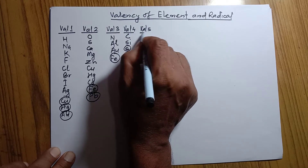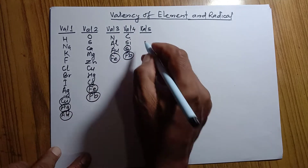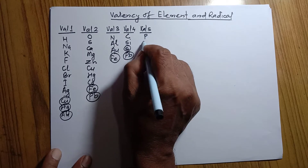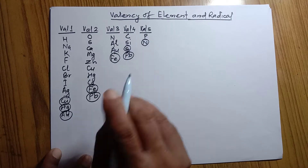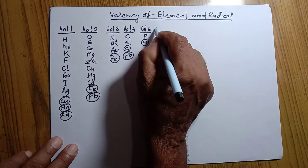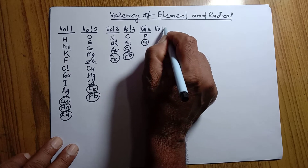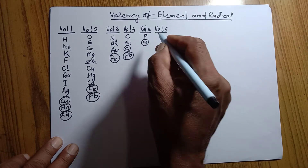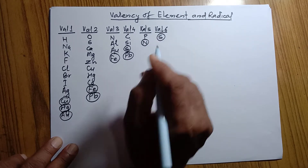Valency 5. The elements having valency 5 are phosphorus, nitrogen, etc. And the element having valency 6 is sulfur.